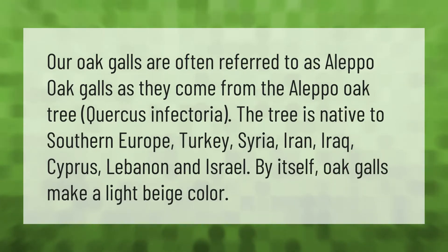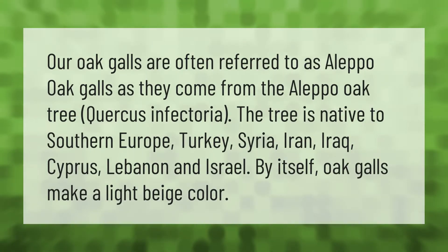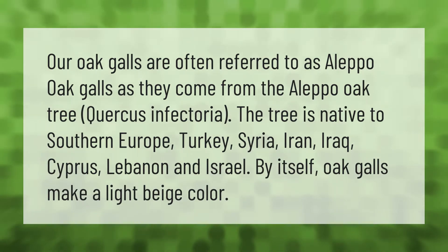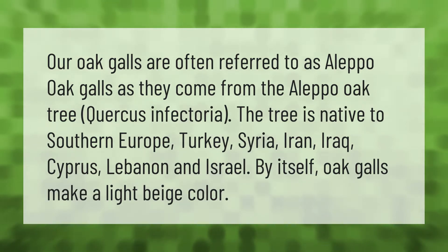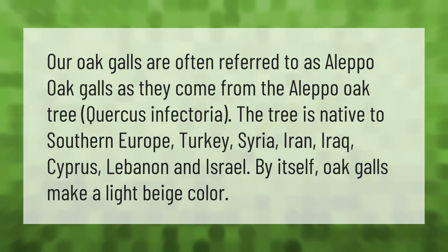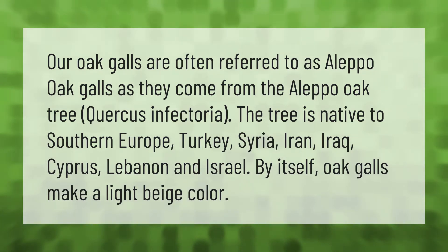Oak galls are often referred to as Aleppo oak galls, as they come from the Aleppo oak tree, Quercus infectoria. The tree is native to southern Europe, Turkey, Syria, Iran, Iraq, Cyprus, Lebanon, and Israel. By itself, oak galls make a light beige color.